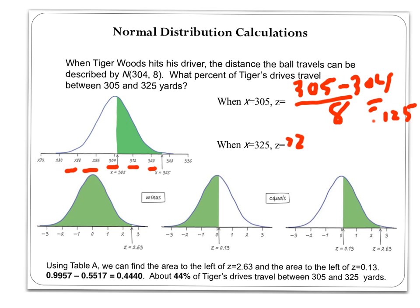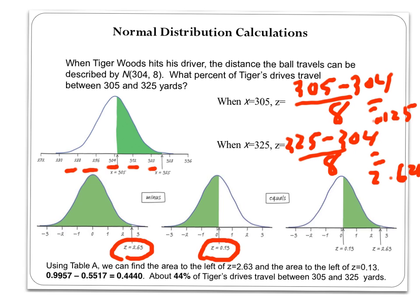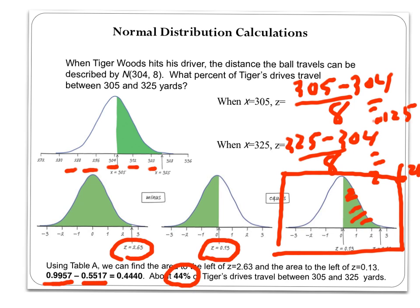When x is 325, then I'm going to go 325 minus 304, divided by 8. And that comes out to 2.625. So now I've got to calculate what percentage of the data is in between those two values. Here's my z-score, 2.63, rounded off, and 0.13. And I want to find the region in between there. So here's the normal curve that represents the region in between here. So I'm using table A, and I find out to the left of 2.63 is 0.9957. And for 0.13, it's 0.5517. So I subtract there, and that comes out to be about 44% of Tiger's drives travel between 305 and 325 yards. So I don't need all these bell curves, but I do need to draw this one showing the region in between those two z-scores.